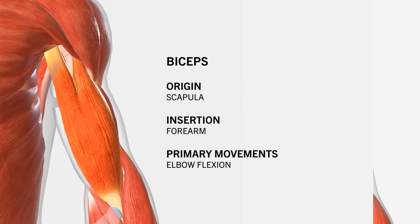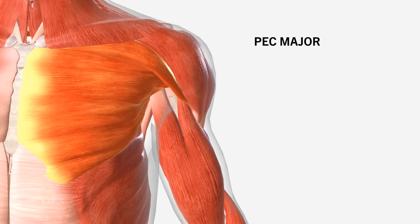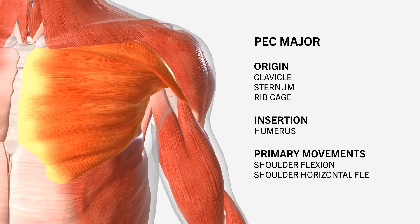Another slightly more complex muscle is the pec major. This muscle has multiple origin sites. The upper fibres attach on the clavicle, the middle fibres attach on the sternum, and the lower fibres attach on the ribcage. Although they all insert at the same point on the humerus, which is the upper arm bone. This creates an almost fan-shaped muscle fibre structure, which has multiple functions such as flexion, horizontal flexion, and extension of the shoulder.